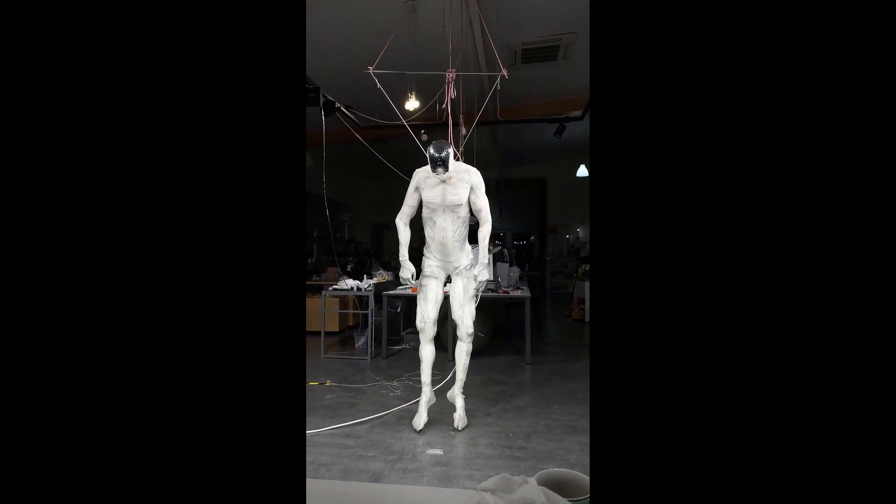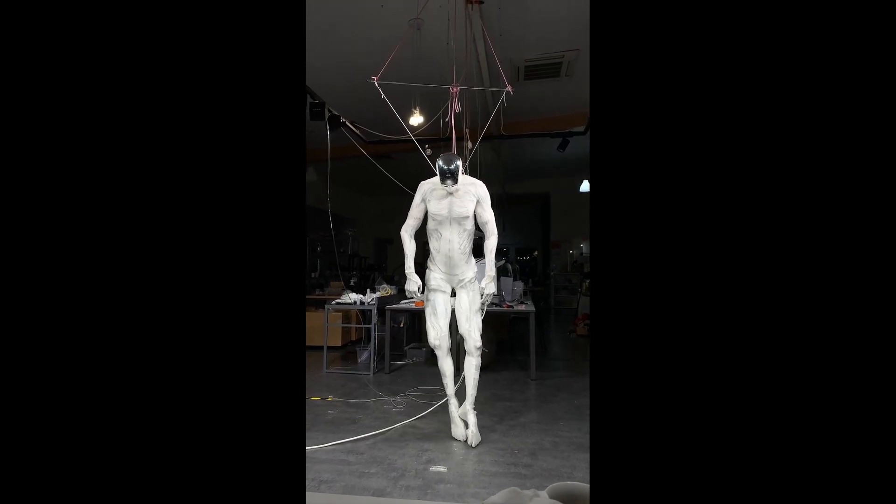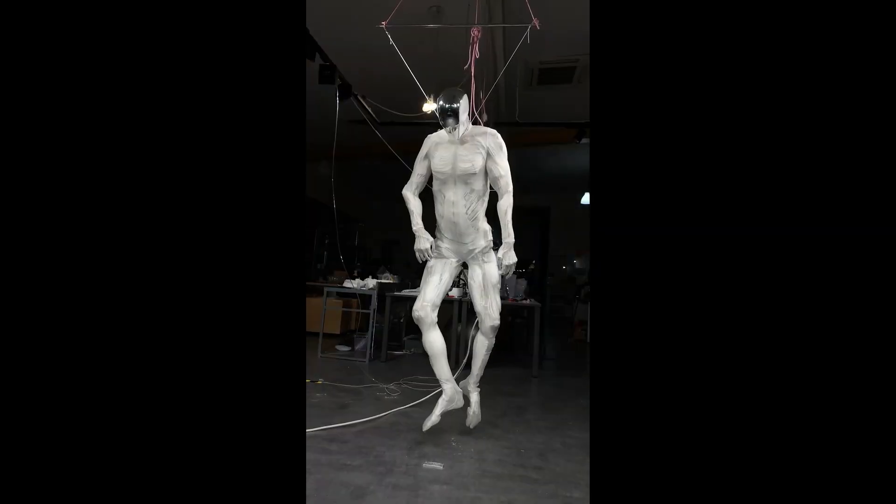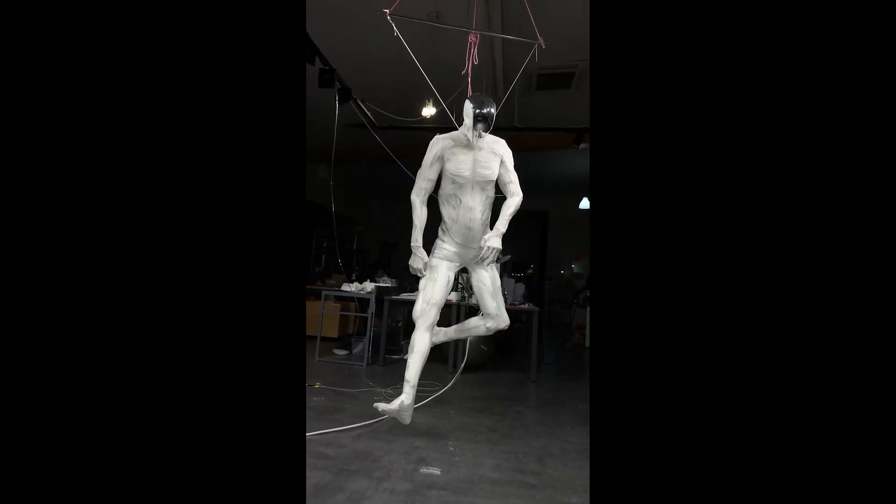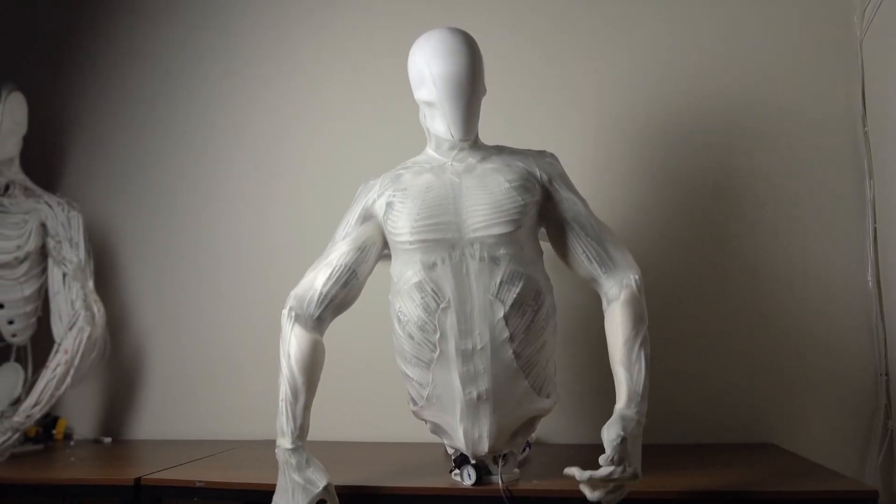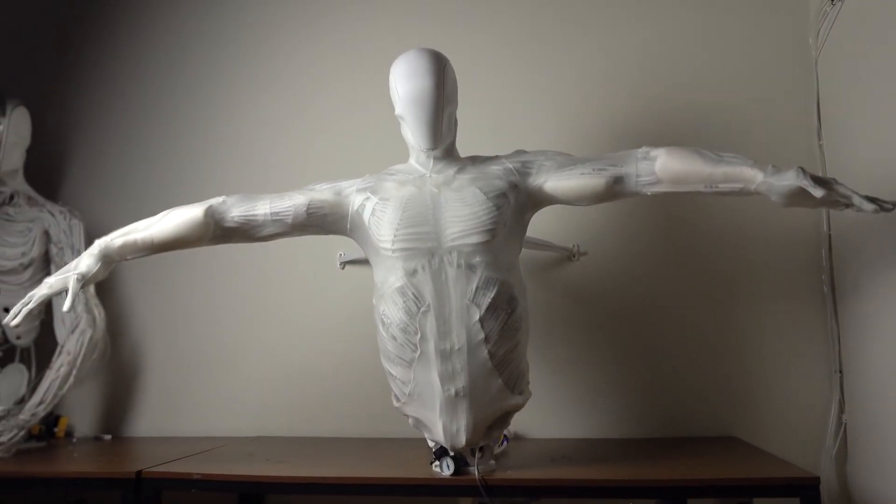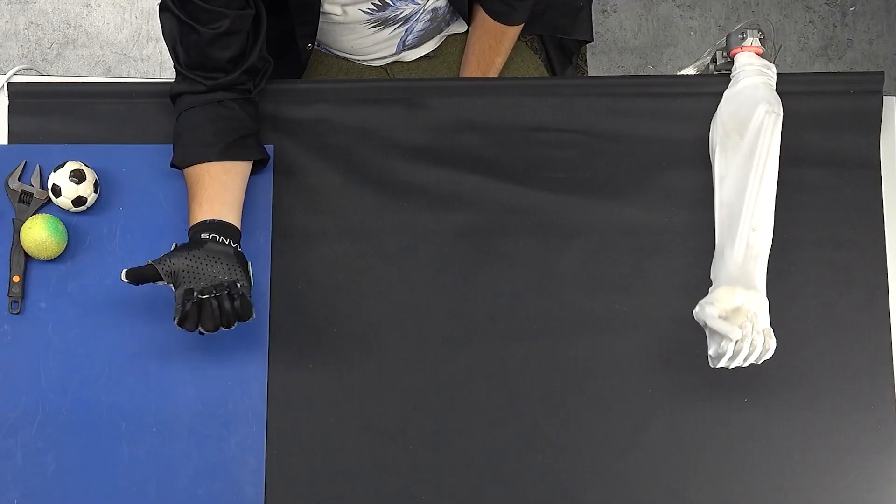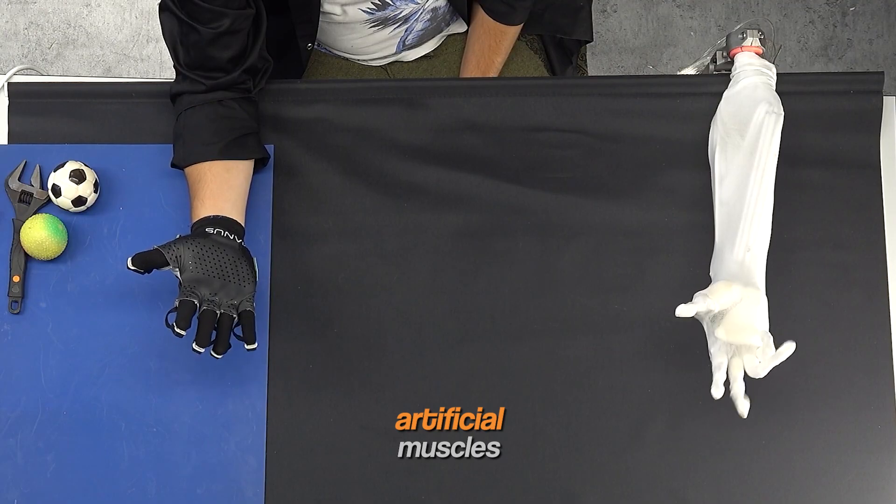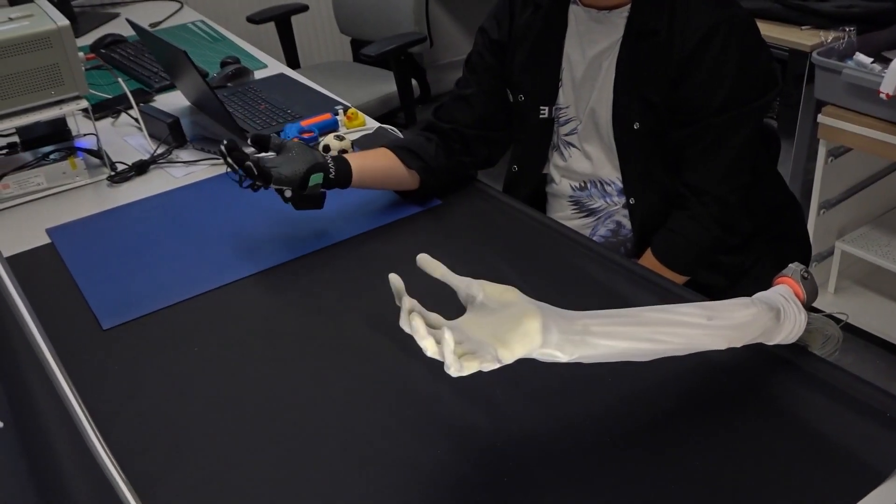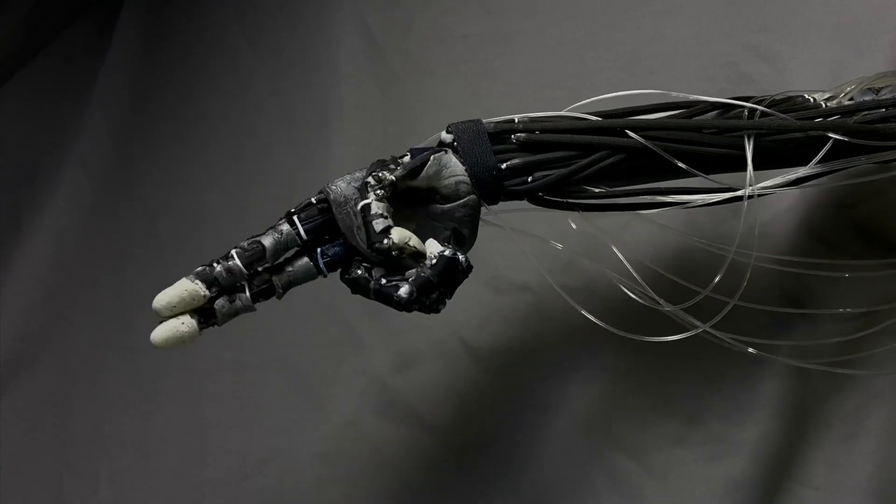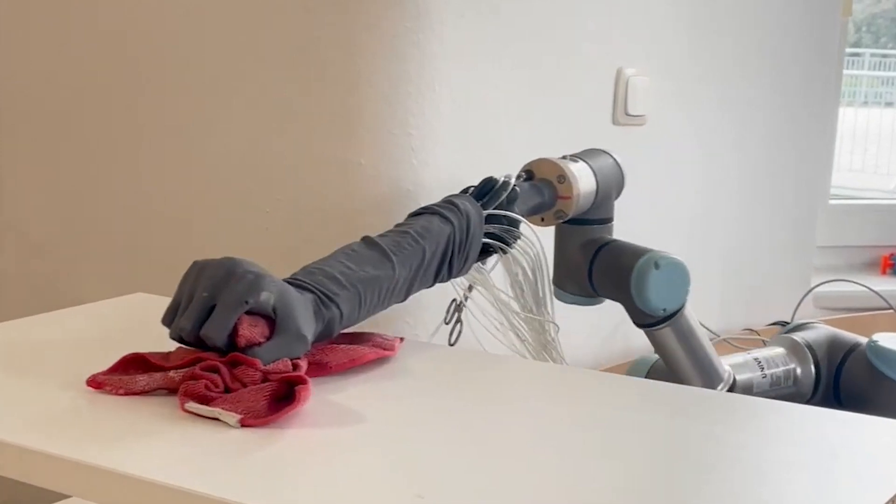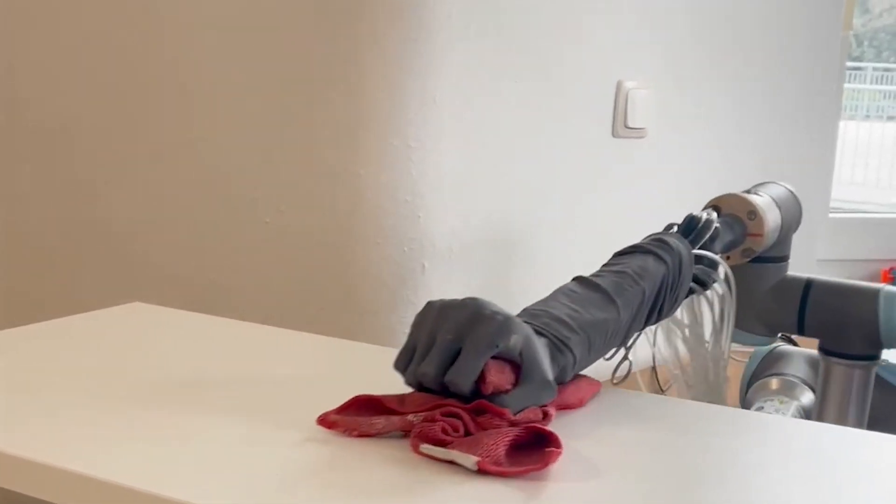In the video, the robot is shown suspended from the ceiling, with its artificial muscles twitching and spasming in what looks like an almost organic way. This dramatic display of motion has left viewers both impressed and uneasy, as the robot's movements appear more lifelike than what has been seen in previous humanoid robots. The unsettling twitching is due to the activation of its artificial muscles, which contract and release in a similar manner to human muscles.